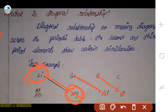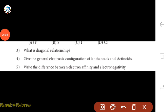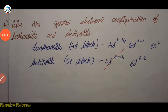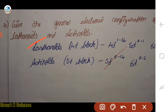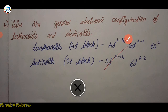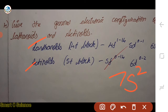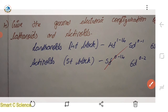Now let's take a look at the electronic configuration of lanthanides and actinides. Lanthanides and actinides are periodic elements. For actinides, the configuration involves 7s². Let's take a look at their electronic configurations.